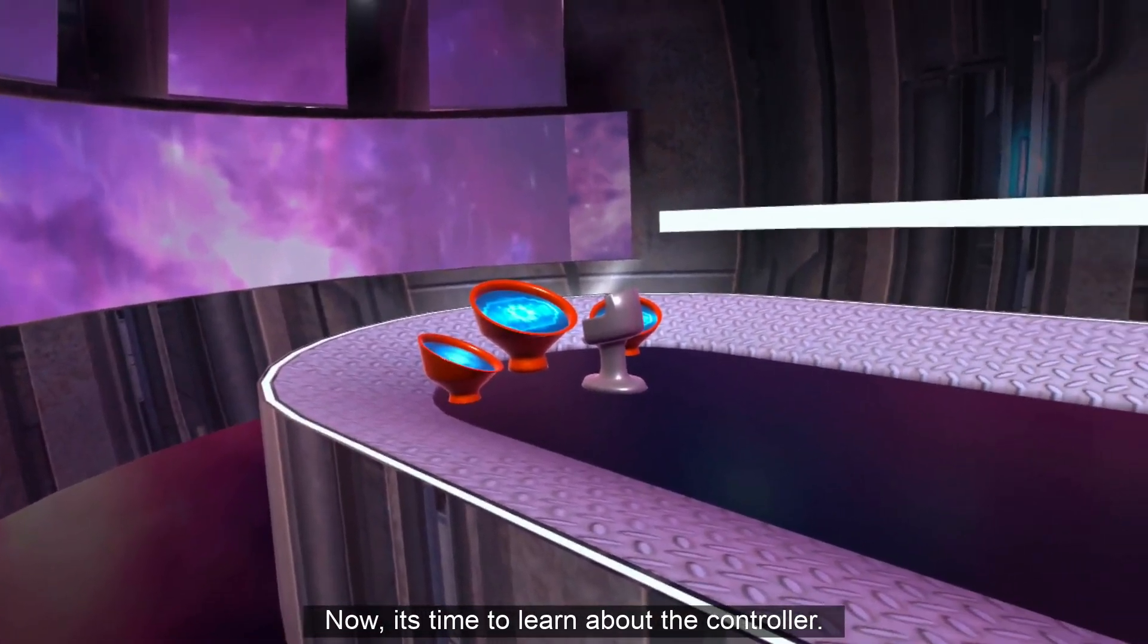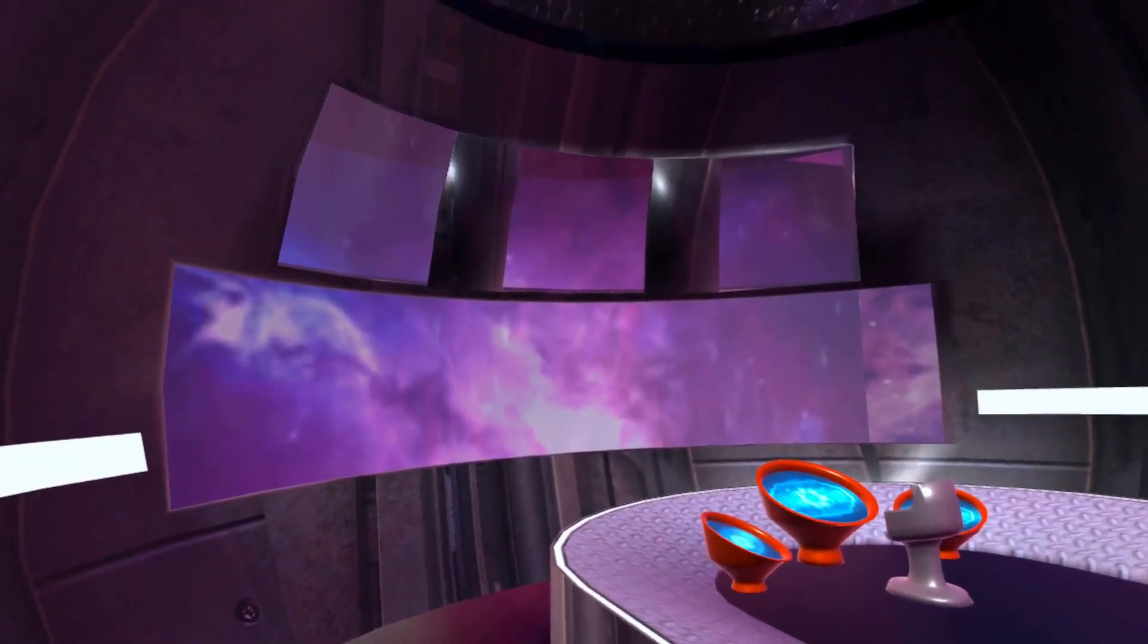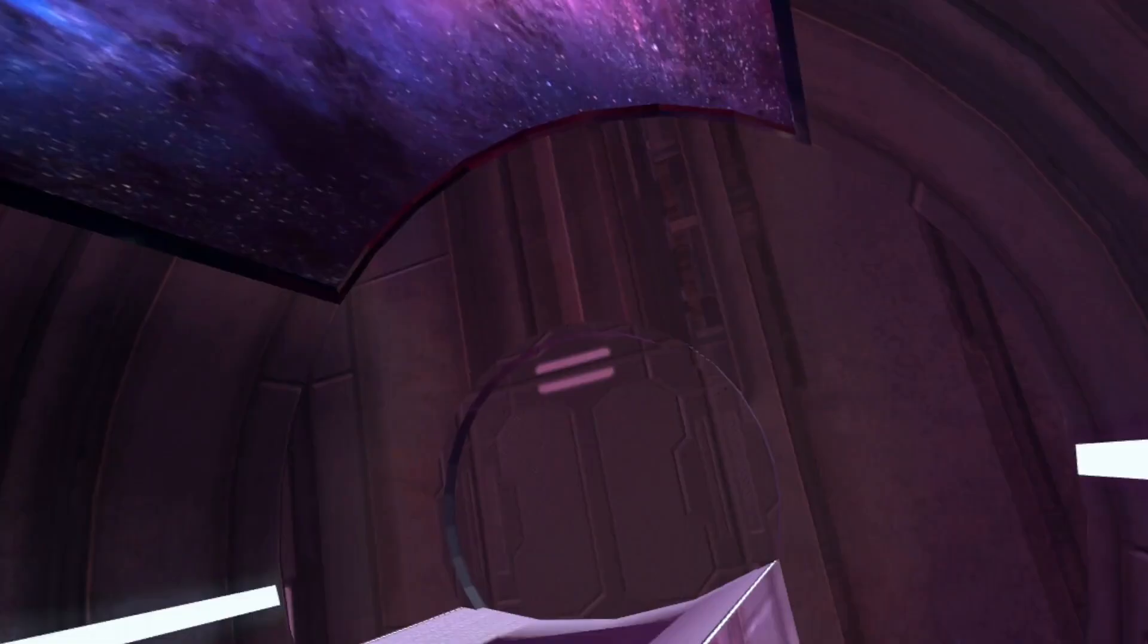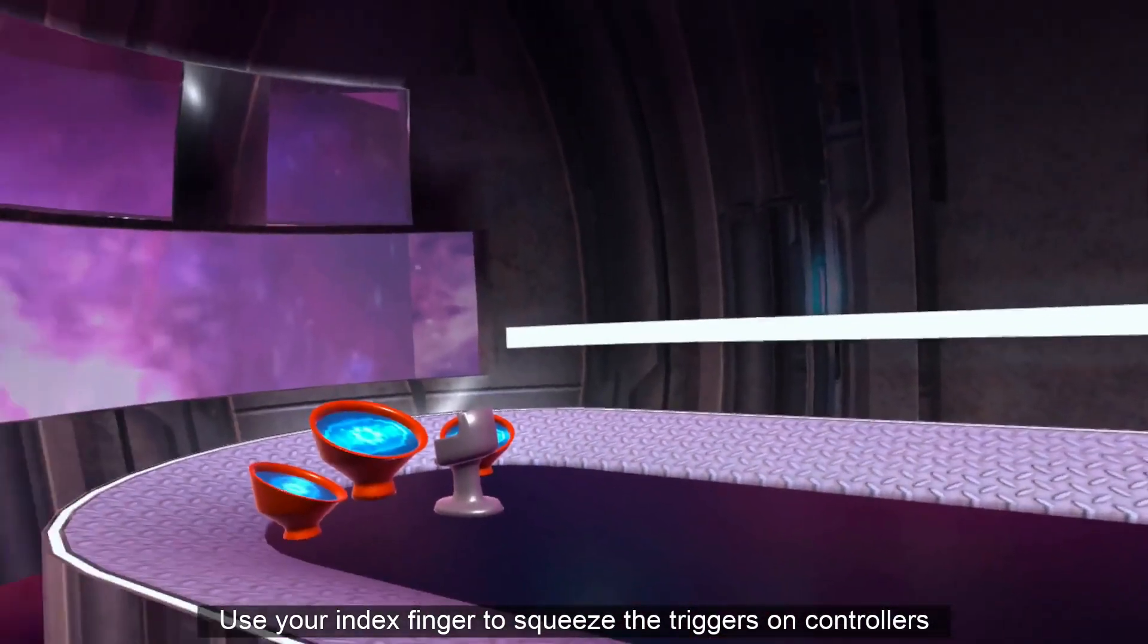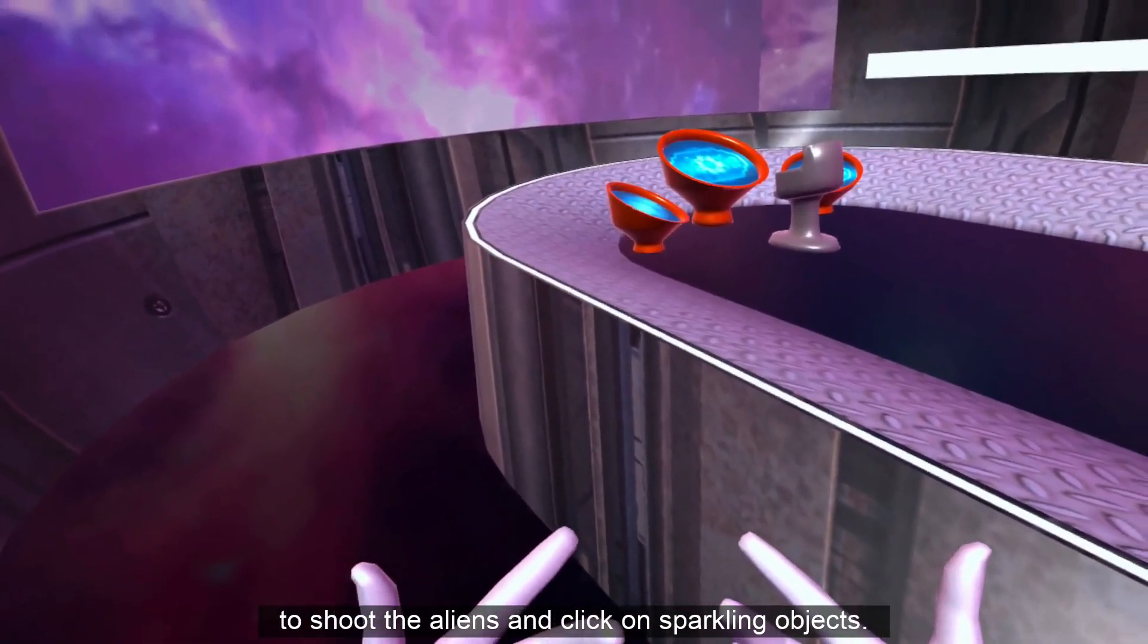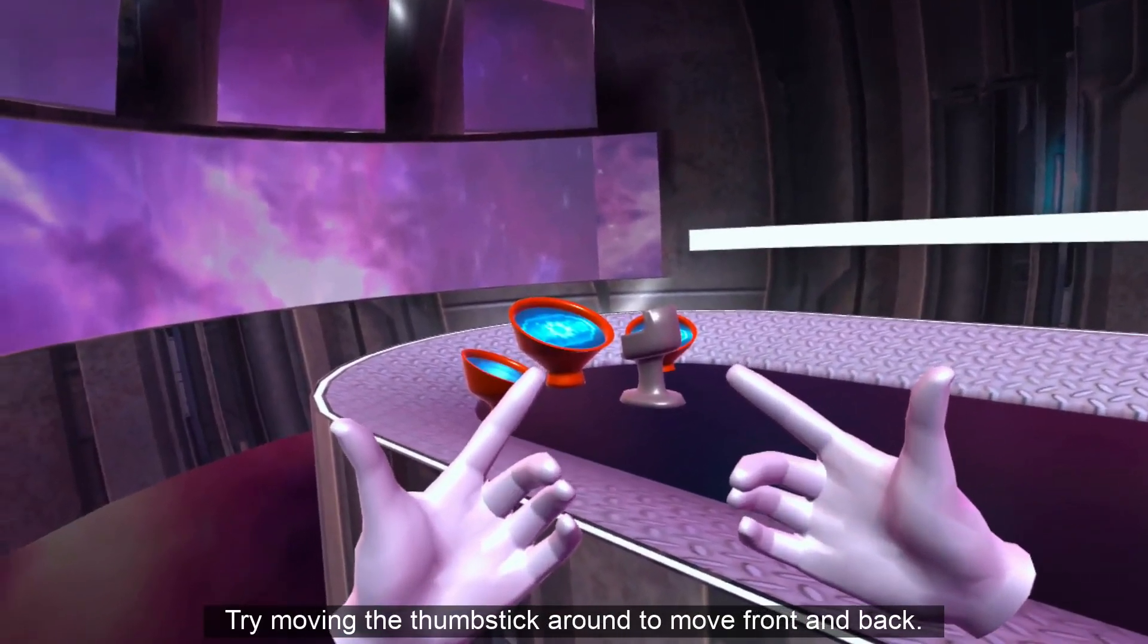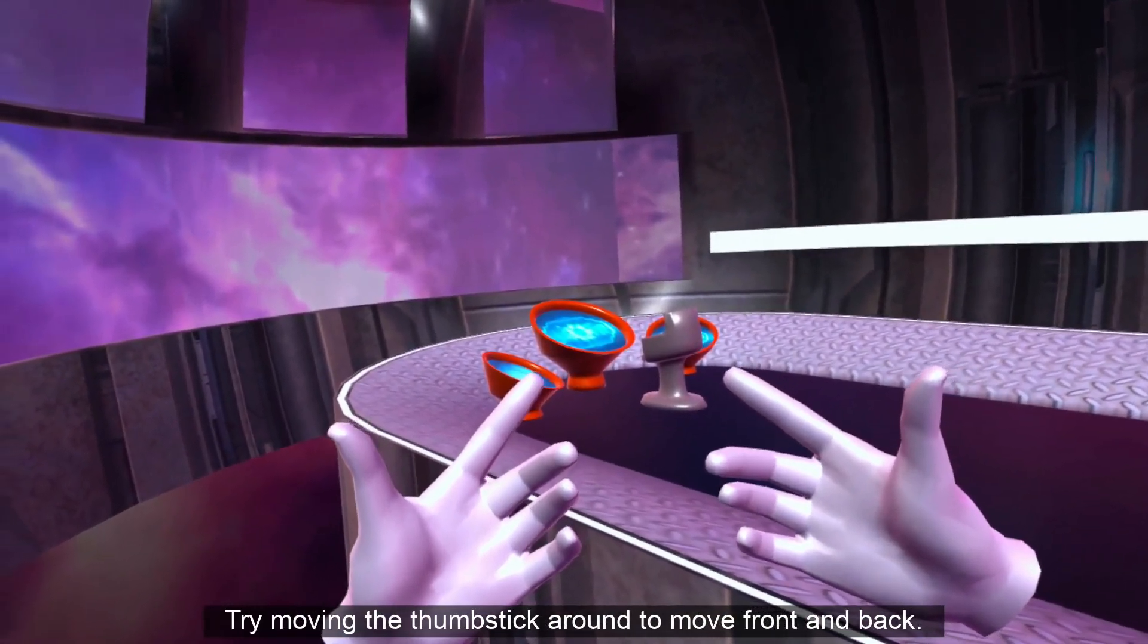Now, it's time to learn about the controller. Move your head to look around. Use your index finger to squeeze the triggers on your controllers to shoot the aliens and click on sparkling objects. Try moving the thumbsticks around to move front and back.